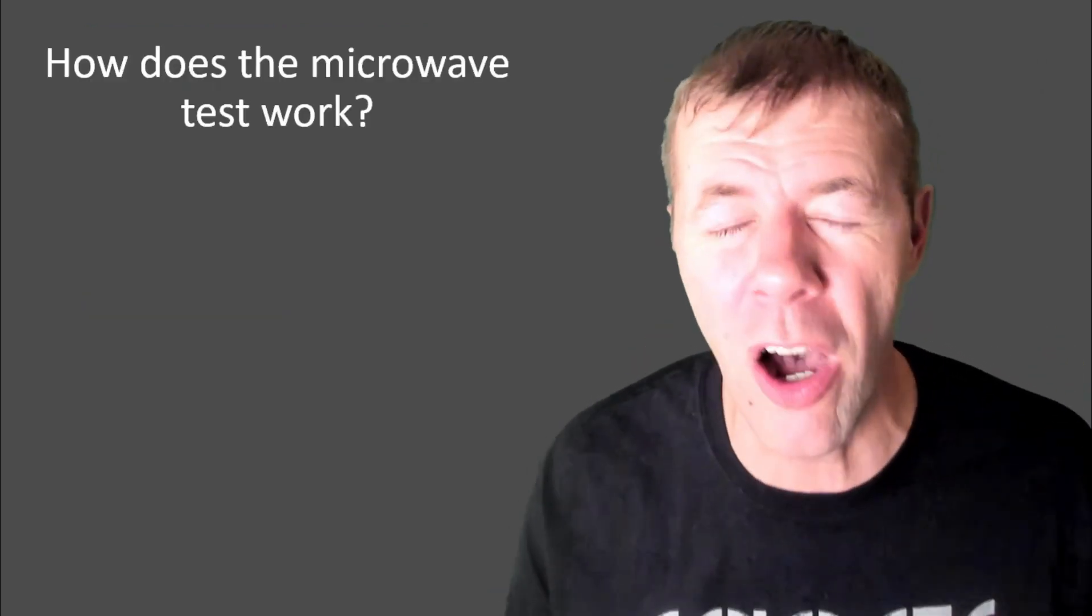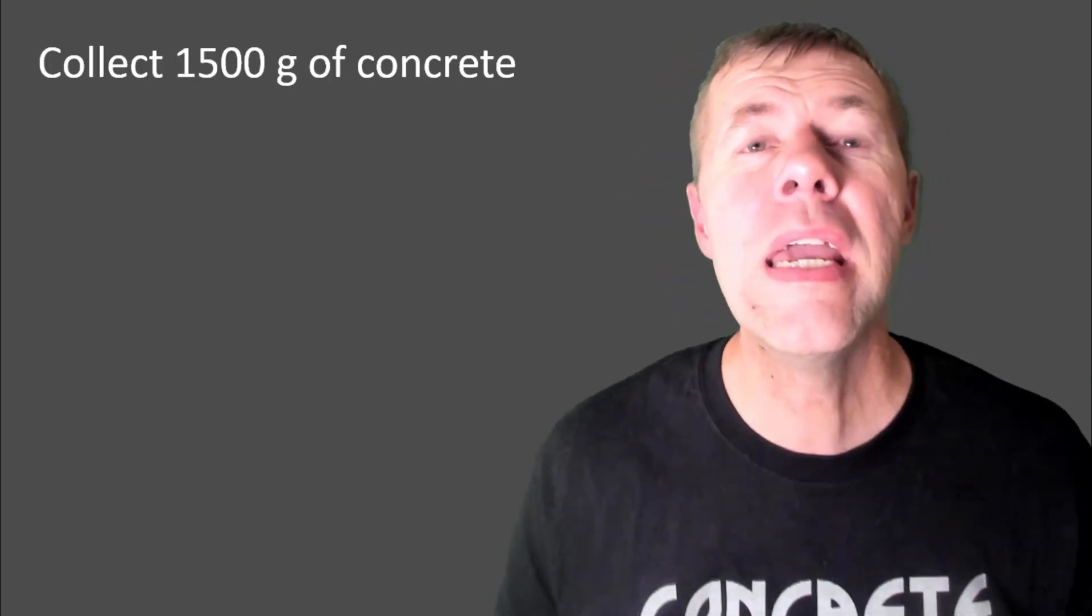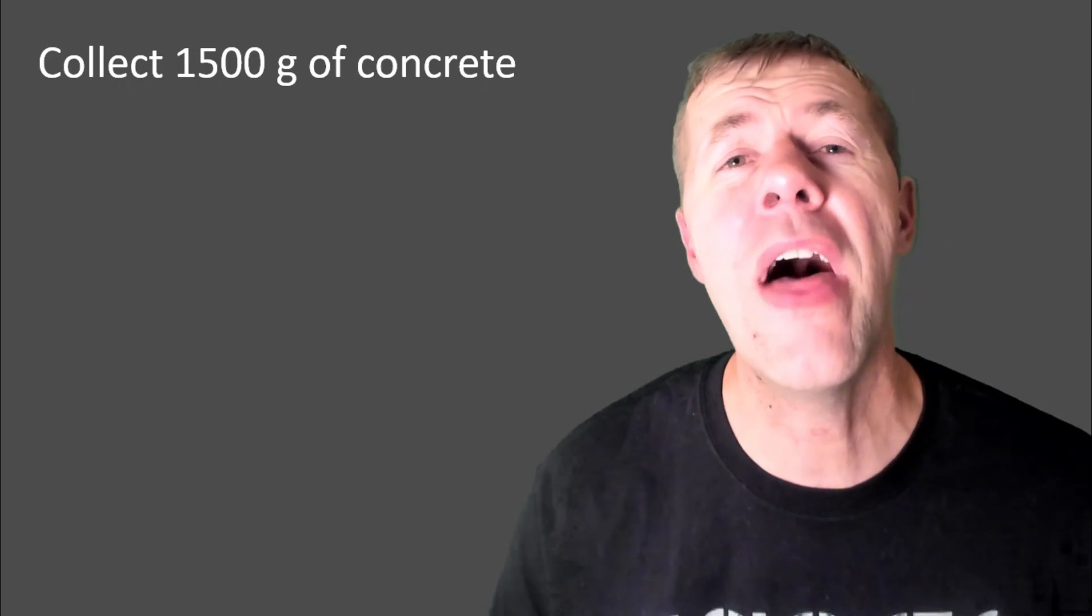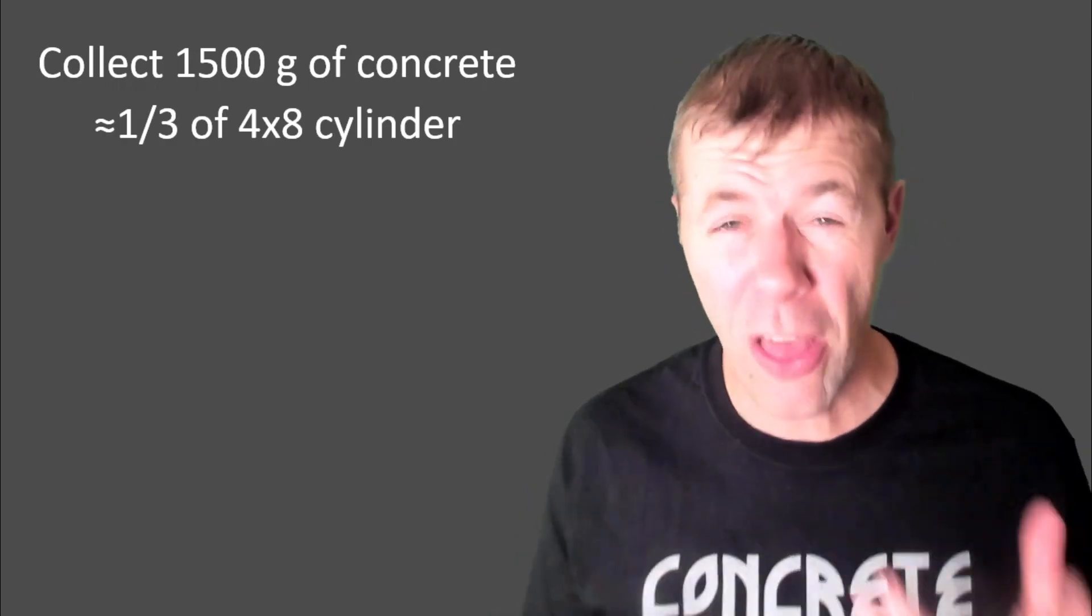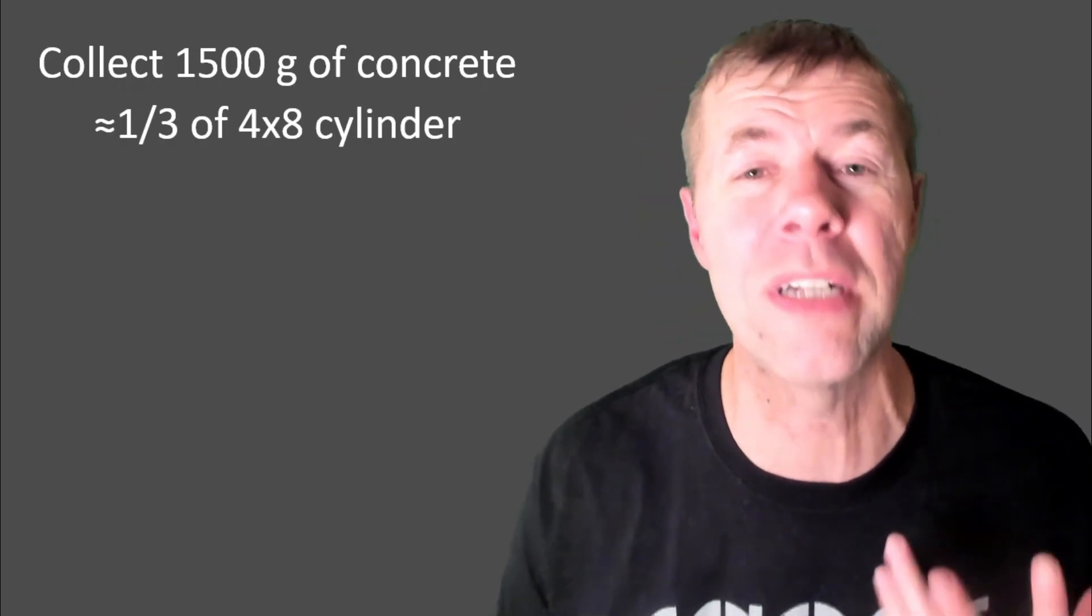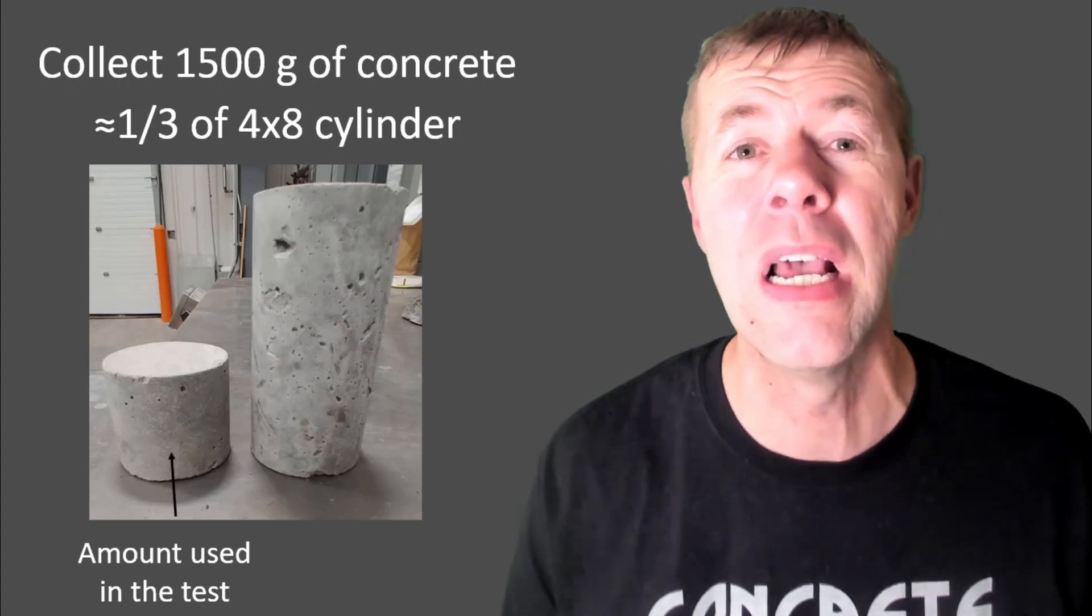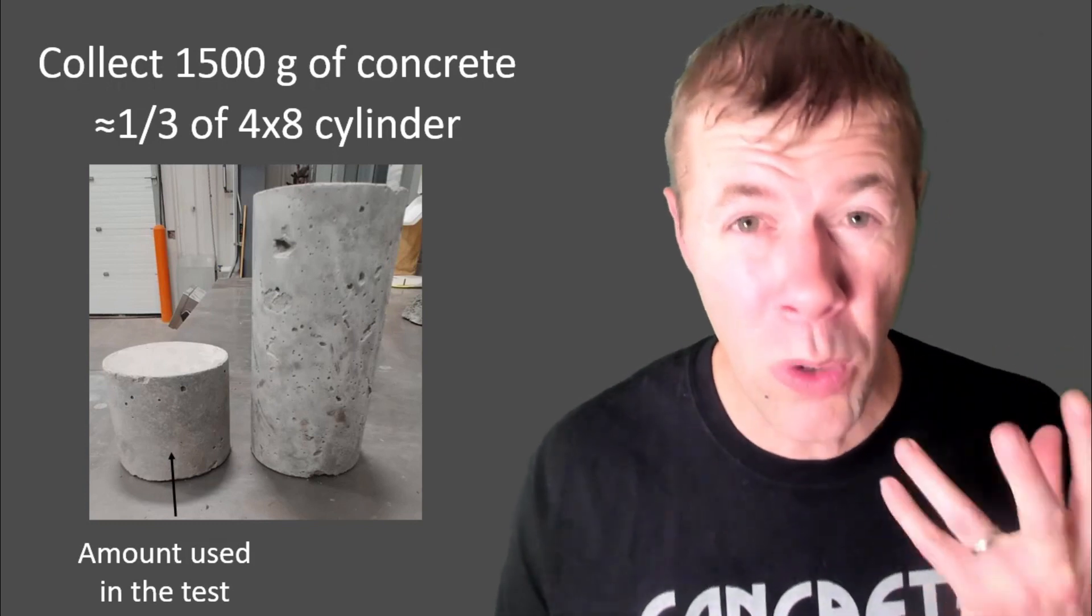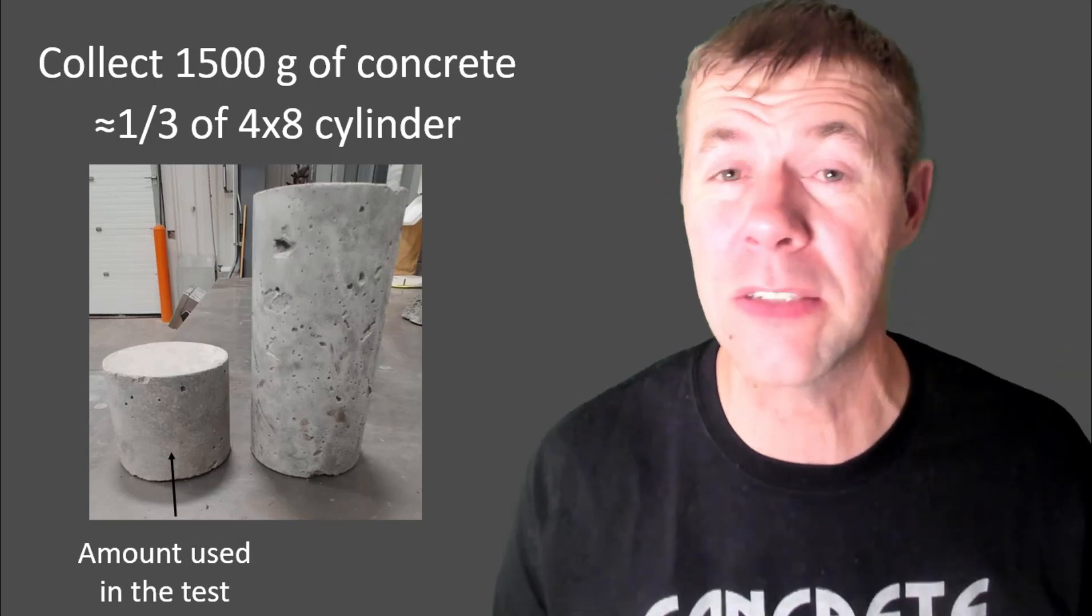So, how does this microwave oven test work though? Well, you first start out with 1500 grams of concrete, that is actually about a third of a four by eight cylinder. If you want to see that with your eyes, it's something like this. Yeah, about a third of a four by eight cylinder is what's used in the test, and that's actually one of the big weaknesses of the test. This test was a great inspiration for us at Oklahoma State.